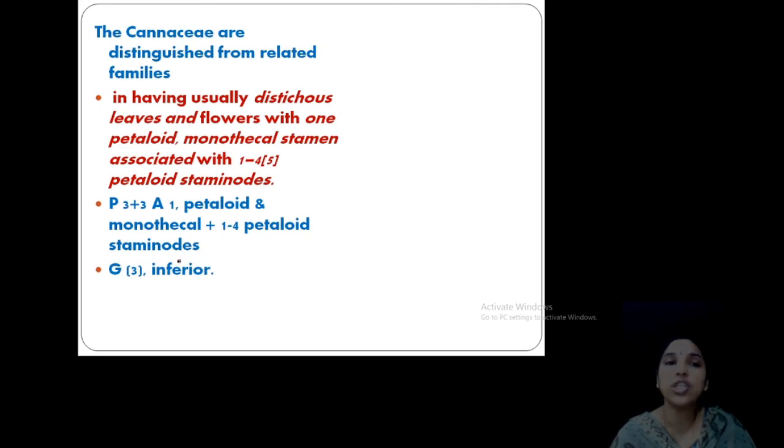And they are distinguished from other families. How you can distinguish it from other families? Distichous leaves and flower with one petaloid monothecal stamen, only one stamen, and associated petaloid staminodes also. Then 3 plus 3 arrangement, petaloid stamen, inferior ovary and trilocular tricarpellary condition.